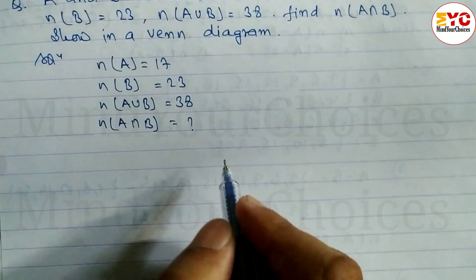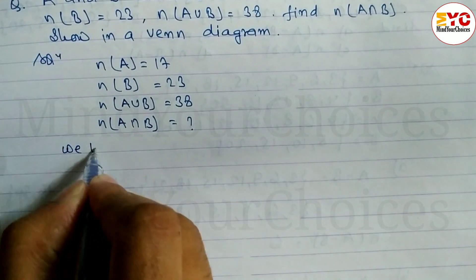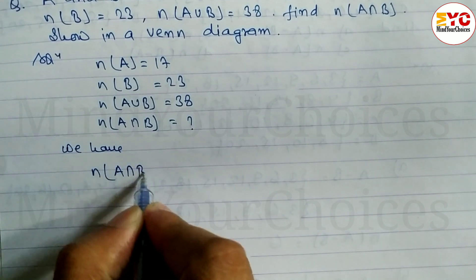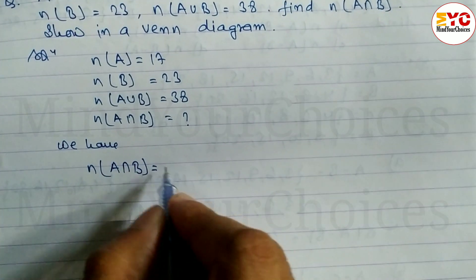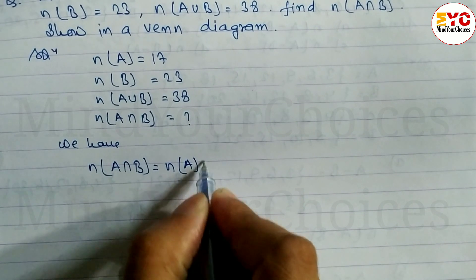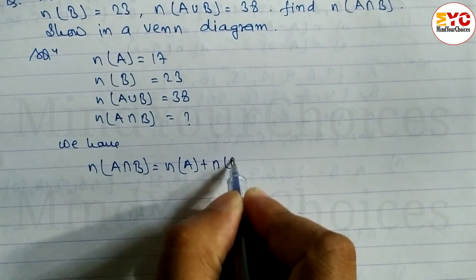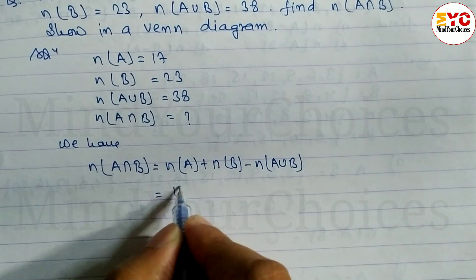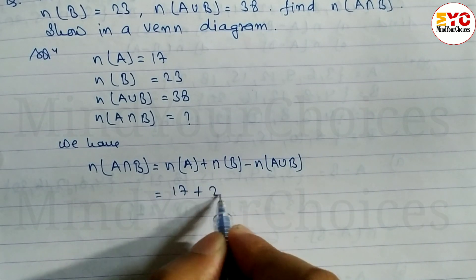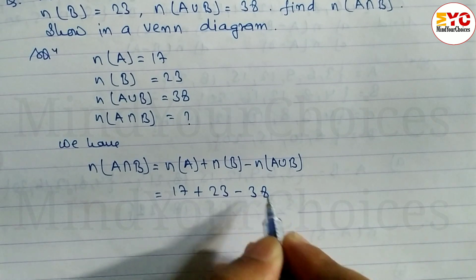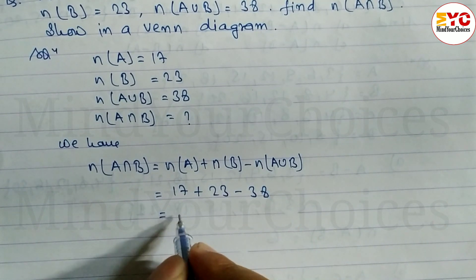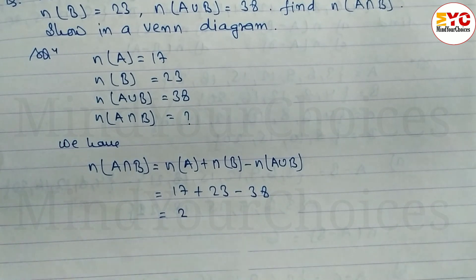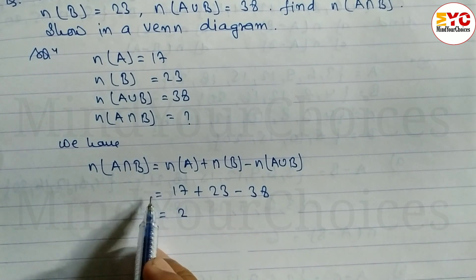First of all we have to find out A intersection B. The formula for cardinal number of A intersection B is: n(A) plus n(B) minus n(A union B). So that gives us 17 plus 23 minus 38. When you add and subtract, you will get 2. This is the cardinal number of A intersection B.